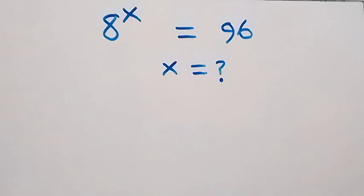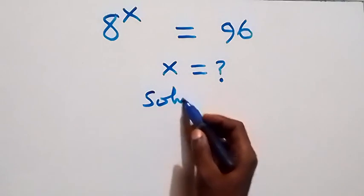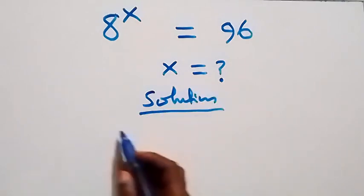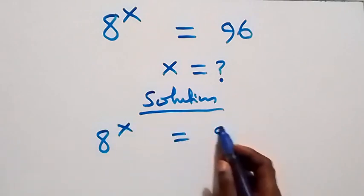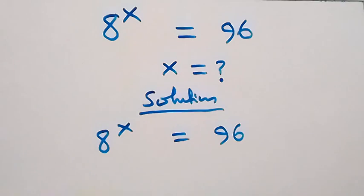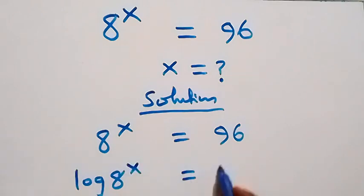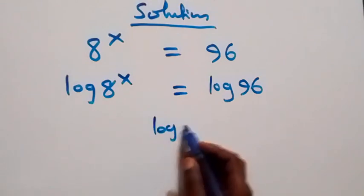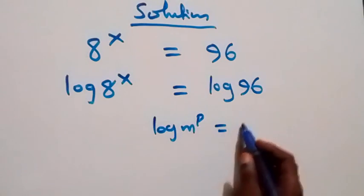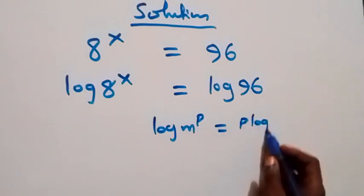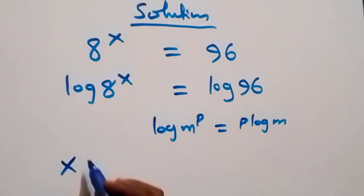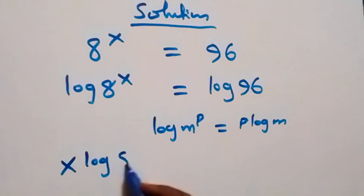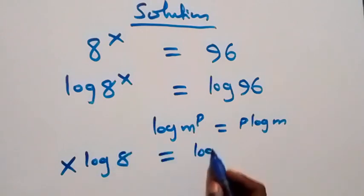Hello, you're welcome. Here's how to solve this nice exponential equation. We have 8 raised to power x equals 96. Let's take the log on both sides: log(8^x) = log(96). Applying the power rule of logarithms, where log(m^p) = p·log(m), this becomes x·log(8) = log(96).